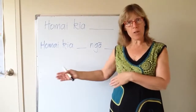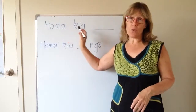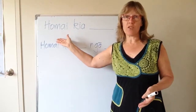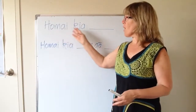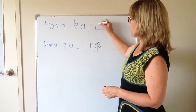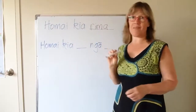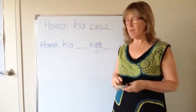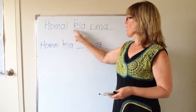Kia hea nga huka — how many sugars. You use 'kia' when you want to ask for a number of things. So 'ho mai kia rima' means give me five. Kind of like high five — ho mai kia rima.